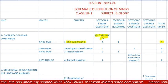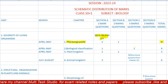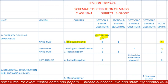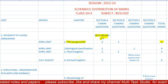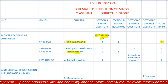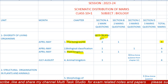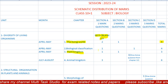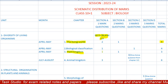The second lesson is 'Biological Classification.' There will be one MCQ question and one three-marks question, and the total paper will be of four marks from it.